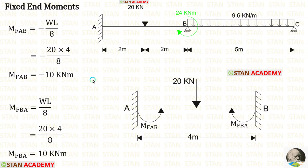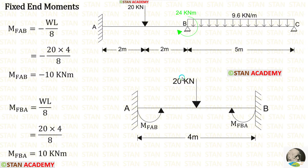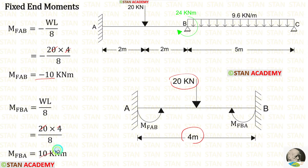Now let us find the fixed end moments. First, let us find them in span AB. In span AB there is a point load of 20 kN acting at the center. The formulas to find the fixed end moments are −WL/8 and +WL/8. Here W is 20 and L is 4. Applying the values, we get M_AB and M_BA.